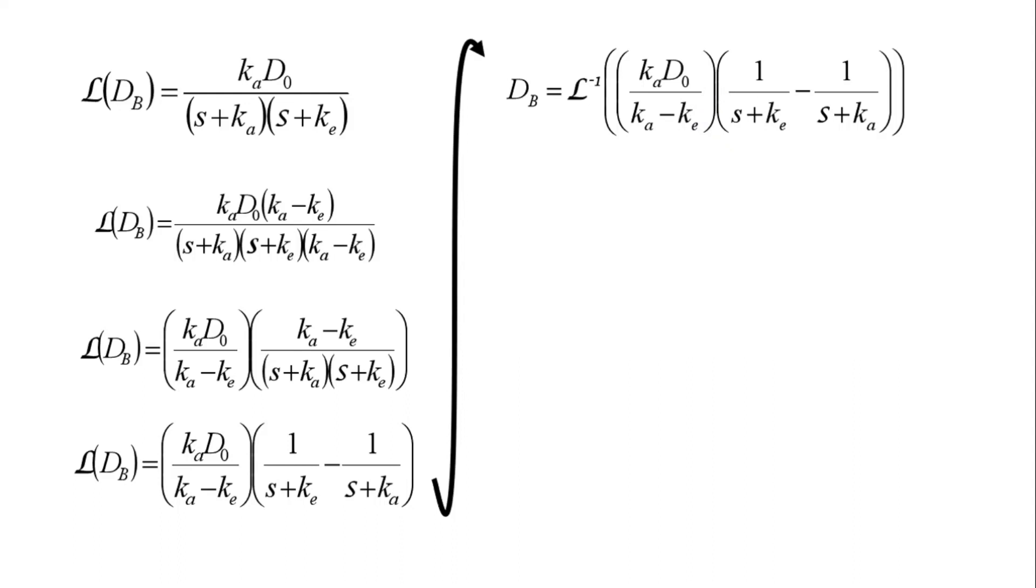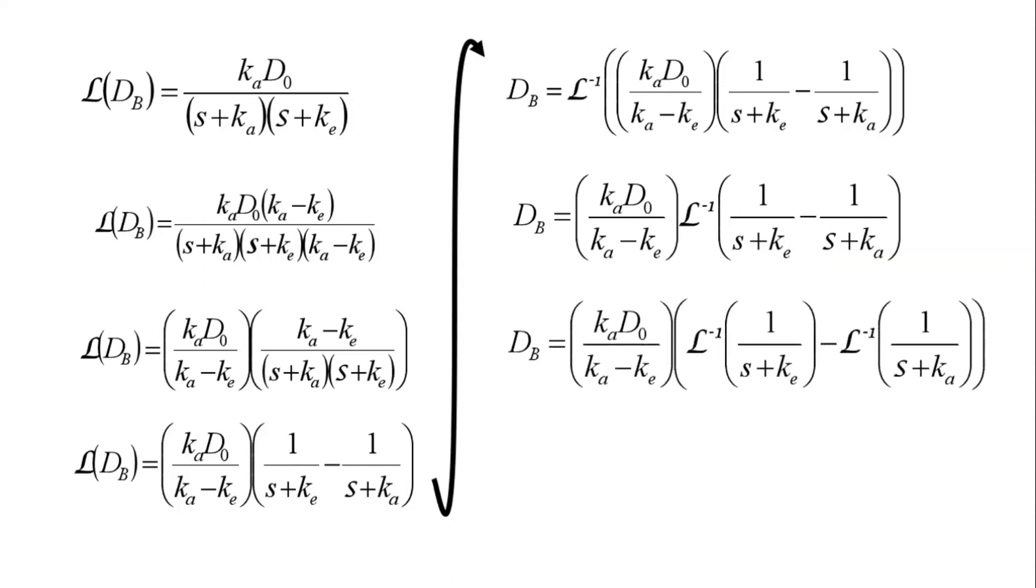Again, the inverse Laplace transform is also a linear function, so we can take that constant term here and just move it out, and these two terms we can also separate out into two separate inverse Laplace transforms. As we just saw before earlier, the Laplace transform of an exponential function looks very similar to this expression here. So what you can do is just take the inverse Laplace transform of these values and turn them into exponentials. And there we have it. This is our expression that we can use to describe how much drug is in the body over time.